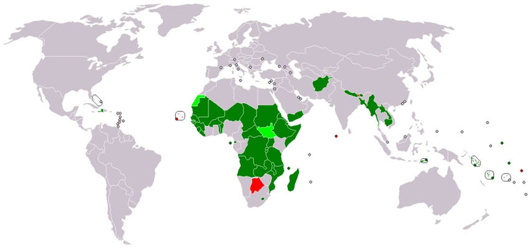Slums form and grow for many different reasons. Causes include rapid rural to urban migration, economic stagnation and depression, high unemployment, poverty, informal economy, forced ghettoization, poor planning, politics, natural disasters and social conflicts. As populations expand in poorer countries, rural people are moving to cities in extensive urban migration resulting in the creation of slums. In some cities, especially in Southern Asia and Sub-Saharan Africa, slums are not just marginalized neighborhoods but are widespread and home to a large part of the urban population — sometimes called 'slum cities.'